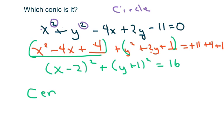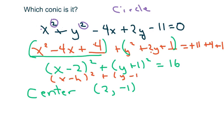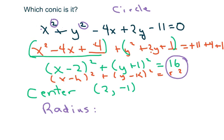So we're on a circle. The center is at (2, negative 1), following the standard form x minus h squared plus y minus k squared equals r squared. The radius r is 4, since r squared equals 16.